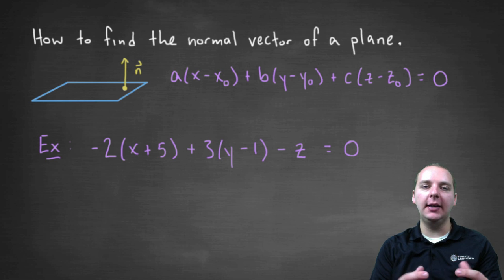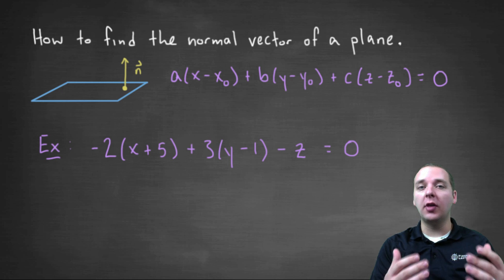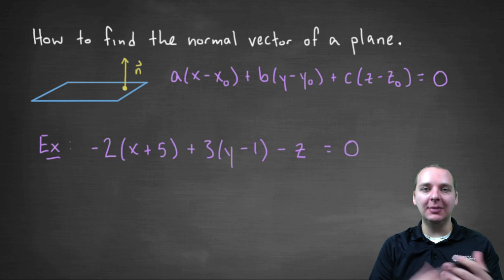For a number of different reasons, you might need to determine a vector that's normal or orthogonal to a plane simply by looking at the equation of a plane. So let me show you how to do that, it's actually quite straightforward.